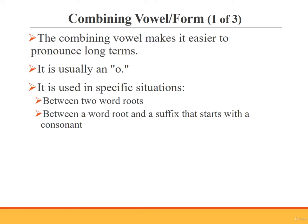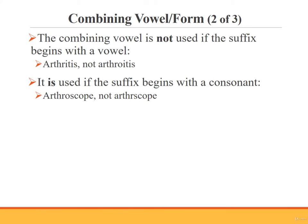The combining vowel makes it easier to pronounce long medical terms. In most cases, the combining vowel is an O, but it can also be an I or an A. The combining vowel is used between certain word parts in certain situations. Specifically, you will find the combining vowel between two word roots, and between a word root and a suffix that begins with a consonant. To decide whether to use a combining vowel between a word root and a suffix, look at the suffix first. If the suffix begins with a vowel, the combining vowel is not used. For example, when combining the word root arthr with the suffix itis, we say arthritis without the combining vowel, not arthro-itis.